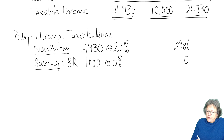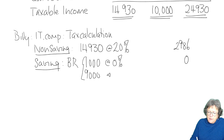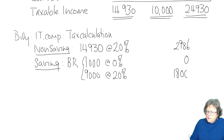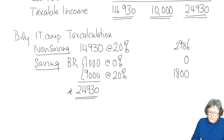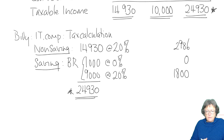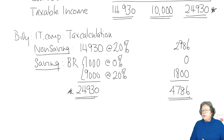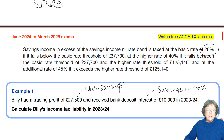The next £9,000 — bringing the total to £10,000 — is still at basic rate, so taxed at 20%, giving £1,800. Always make sure the income column adds up correctly as a safety net to ensure you haven't missed anything. Then add up the tax column and you have your answer. Let's move on to example number two.